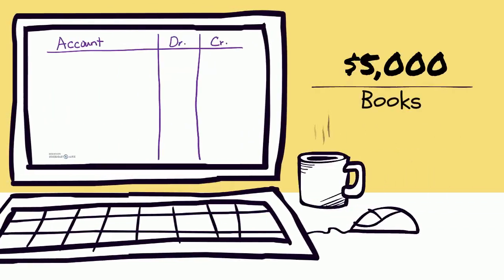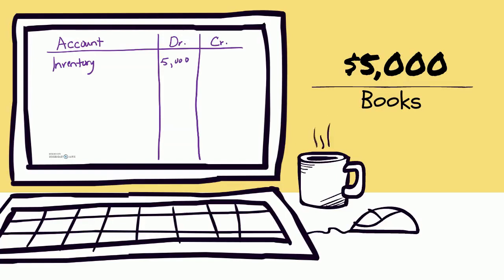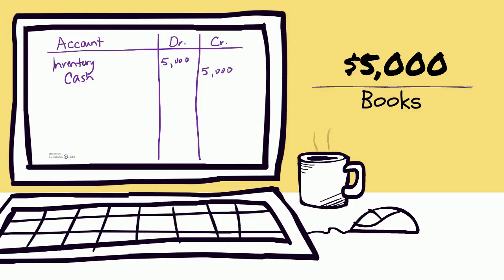We also purchased books for five thousand dollars. We're a coffee shop and bookstore, so we also hope to sell books. An asset increased — Inventory again — and an asset also decreased. We debit Inventory for five thousand dollars, and since we gave cash, we credit Cash for five thousand dollars. Also notice that in a journal entry, all debits are listed first and all credits are listed next with a slight indentation.